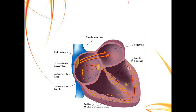Looking at another picture: the SA node and internodal pathways generate impulses that contract both atria, which are then led down to the AV node, passed on to the bundle of His and the Purkinje fibers, which cause the ventricles to contract as well.